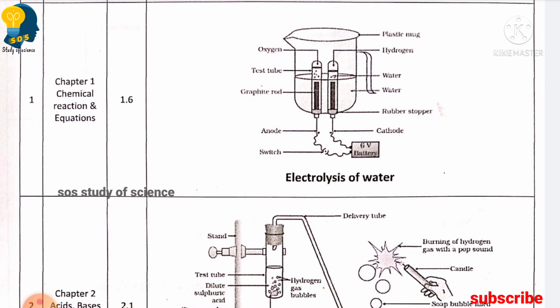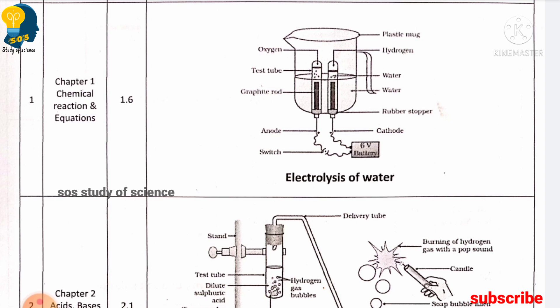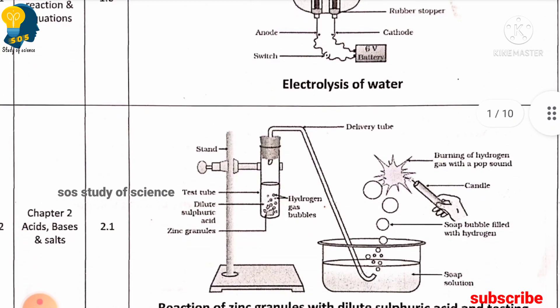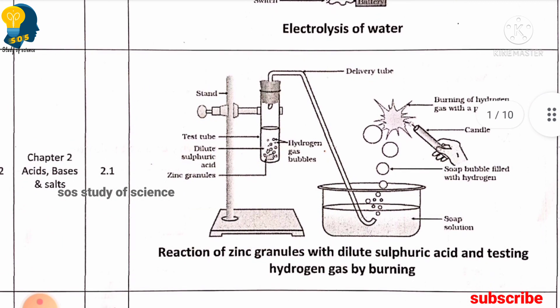Let me start with the first diagram. The first diagram you have to learn is electrolysis of water, from the first lesson chemical reactions and equations. The next diagram is reaction of zinc granules with dilute sulfuric acid and testing the hydrogen gas by burning, from the lesson acids, bases and salts.